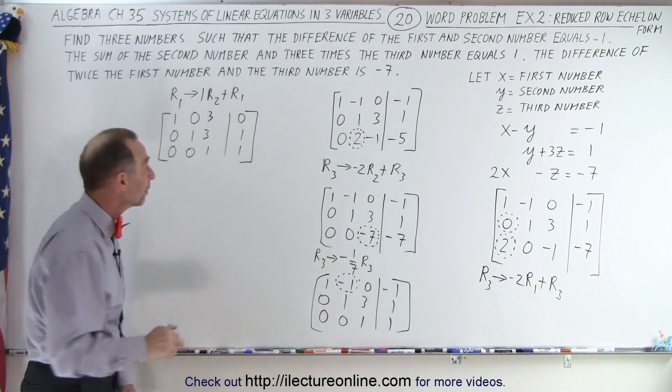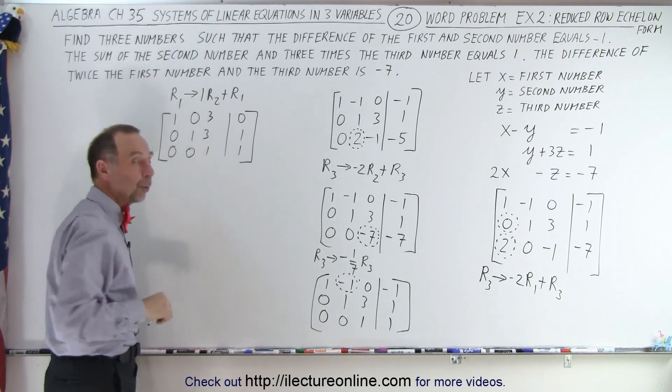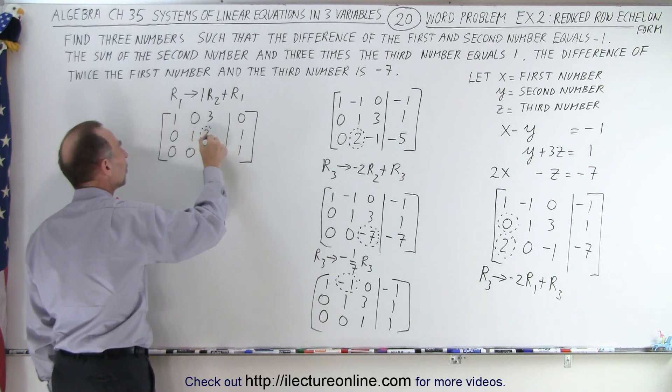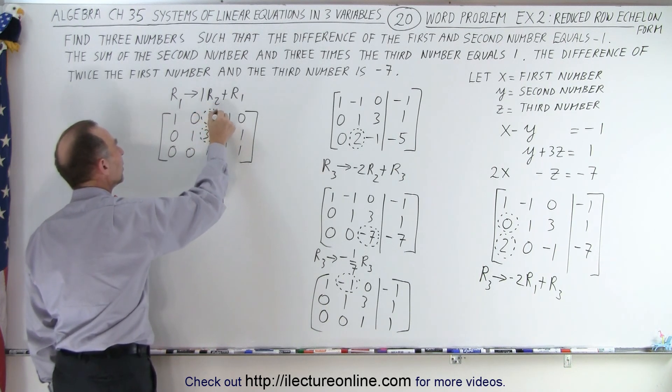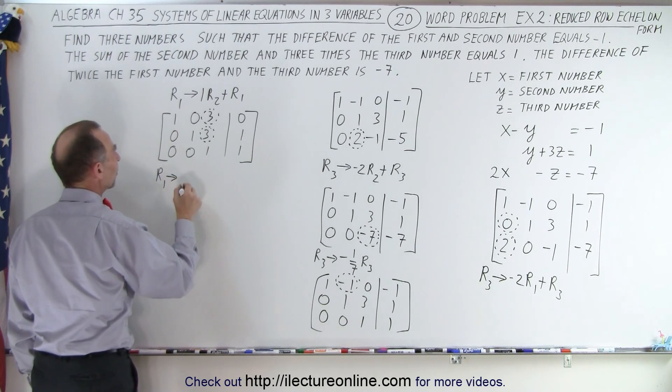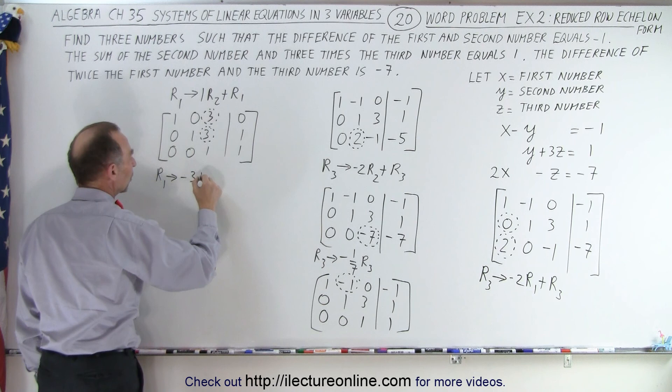Of course, we're not done yet because now we want to get rid of these two since this is already a one. We want ones across the diagonal, but now we want to get rid of these two numbers. This three and this three. That means we're going to take the first row and replace it by negative three times the row with the one in it, which is row three.